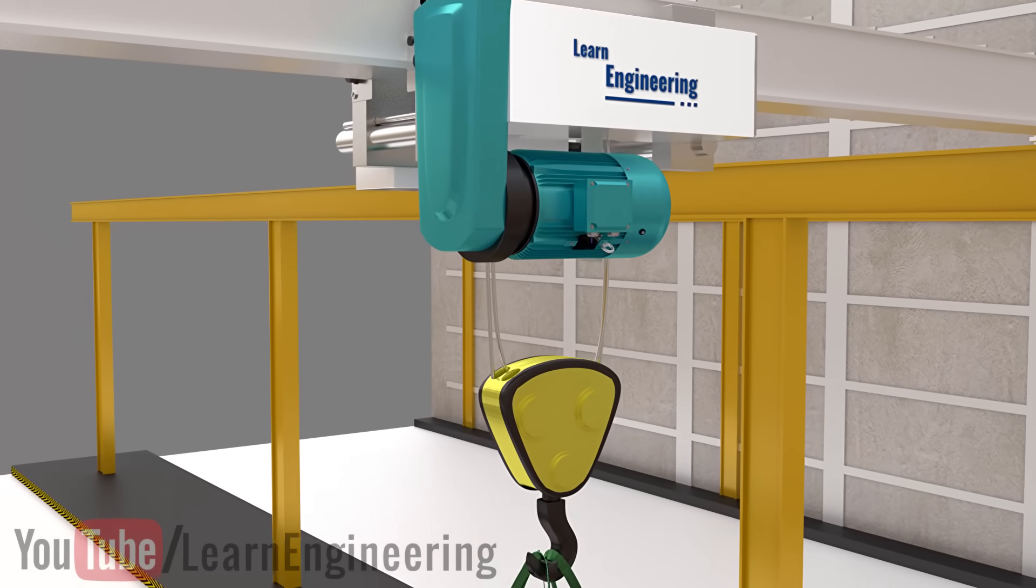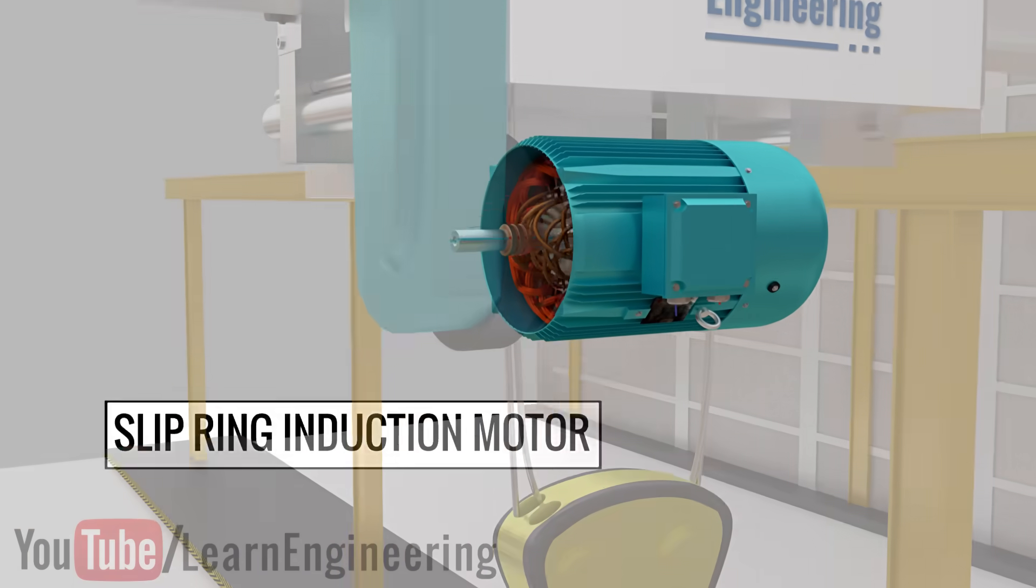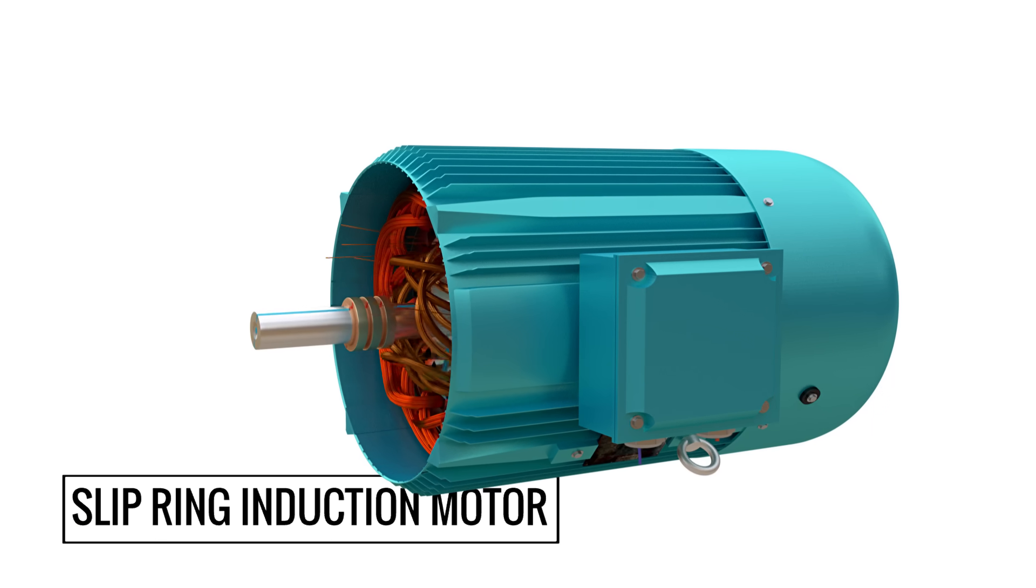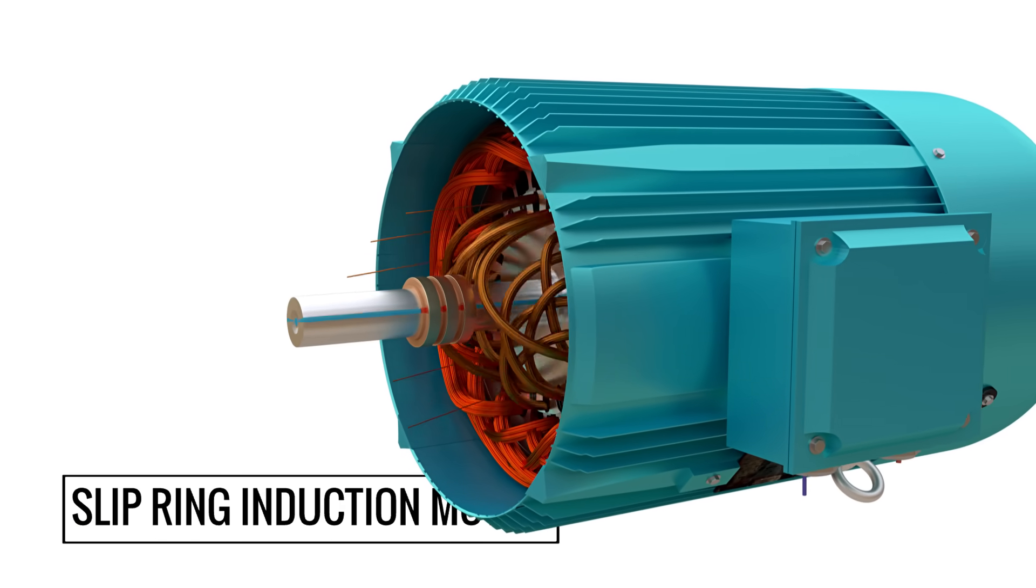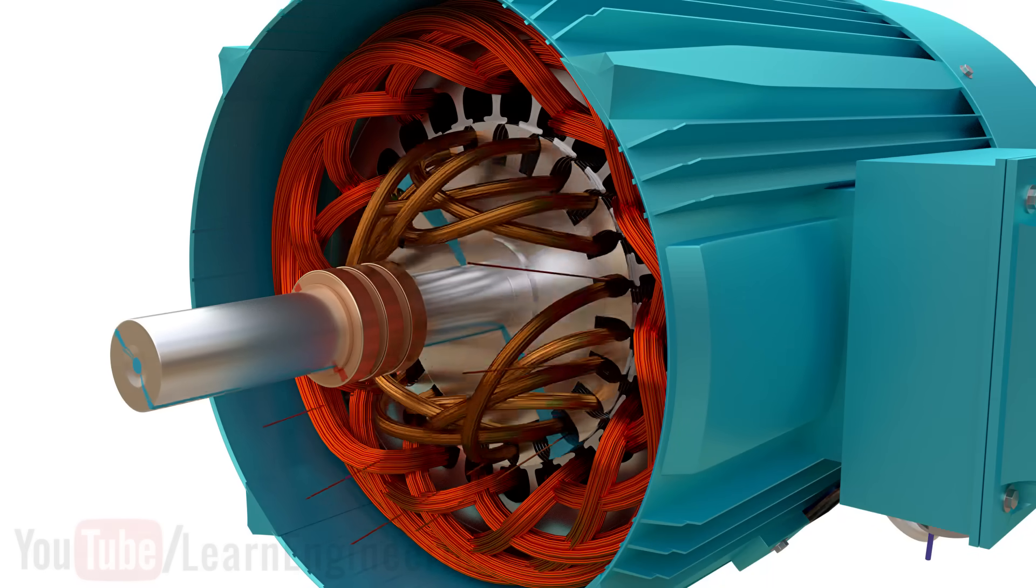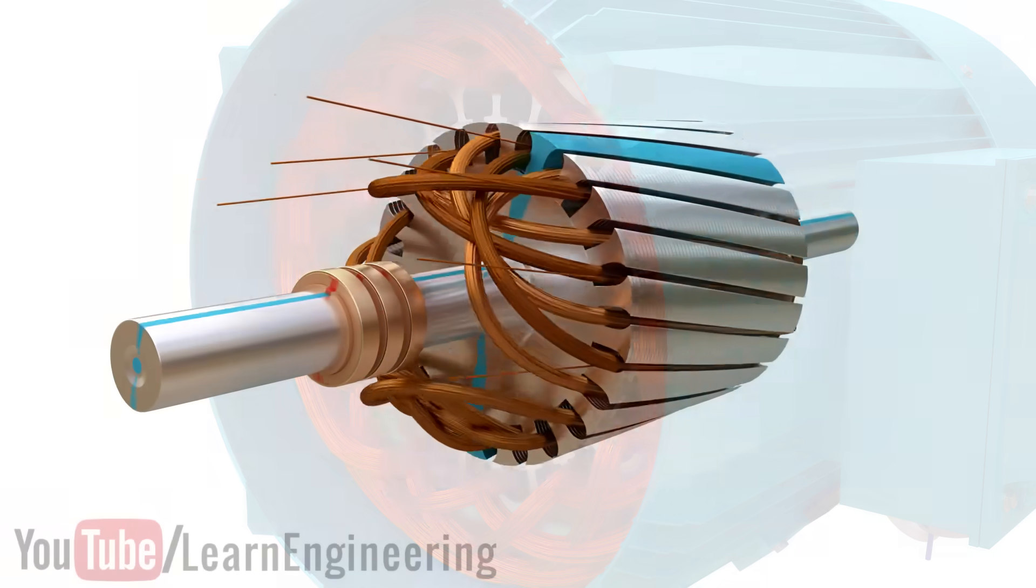To overcome this problem, the slip ring induction motor comes into the picture. The working principles and stator construction of the slip ring induction motor are exactly the same as that of a squirrel cage motor. However, the rotor construction of the slip ring motor is quite interesting.